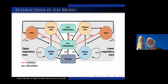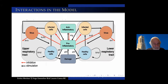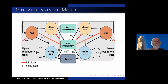Here's a sketch of the model. We have the upper respiratory tract and the lower respiratory tract. Healthy cells are infected by virus and become infected cells, which then release virions — this is your standard viral replication model. The healthy cells also die, and this death constitutes damage. That damage induces pro-inflammatory cytokines, which also cause collateral damage. These pro-inflammatory factors kill infected cells and slow down viral replication.